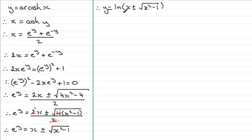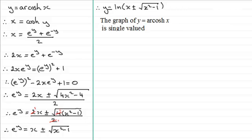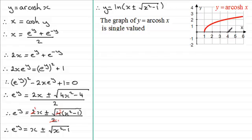Now we have two possibilities here: plus or minus the root of x squared minus 1, and both are in fact possible solutions. But knowing that the graph of the inverse cosh of x is single valued — for any x there's just one value of y and for any y there's just one value of x — it turns out we need to take the positive value. I'll show you what happens when we take the negative value as we progress through the tutorial.